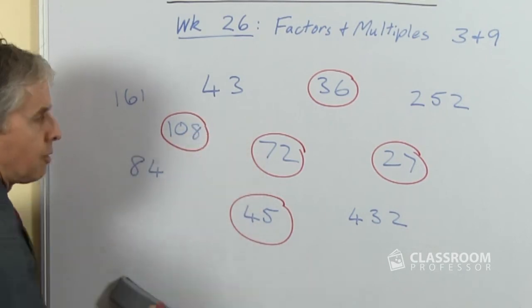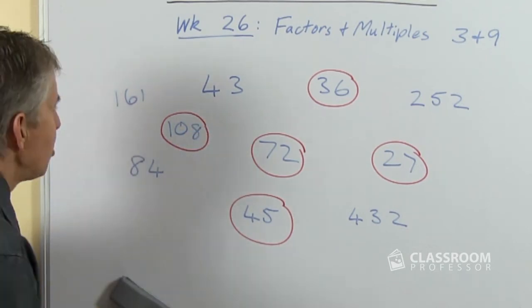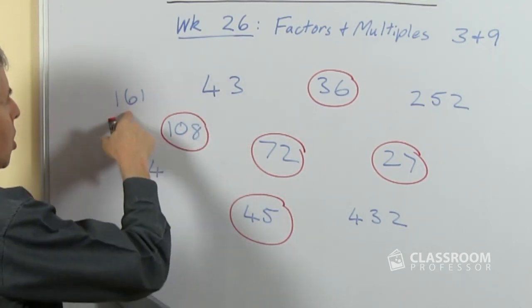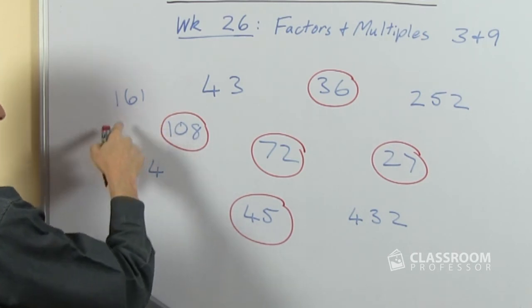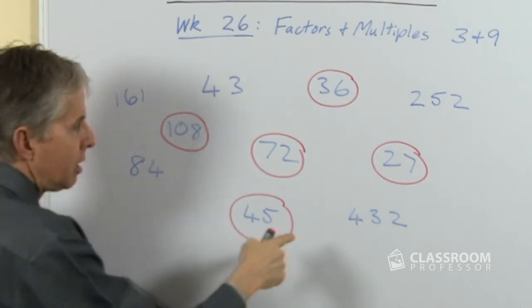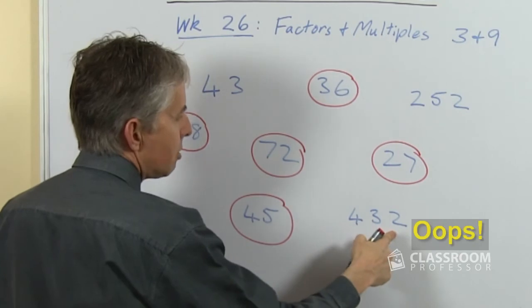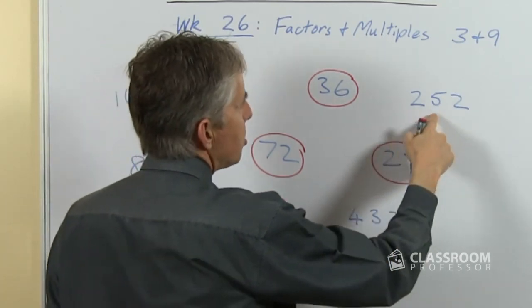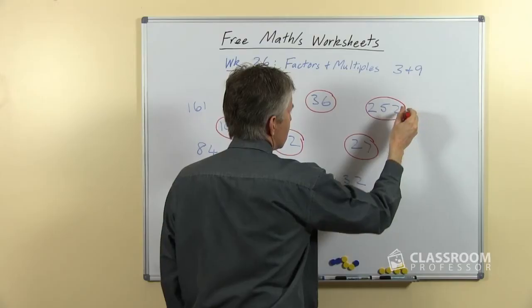108, if they know up to 12 times 9, that's it, we've got that one. 1 plus 0 plus 8 is 9. 1 plus 6 plus 1 is only 8, that can't be a multiple of 9. 4 plus 3 is 5, plus 2, that's only 7. 2 plus 5 plus 2 is 9, so that is a multiple of 9.